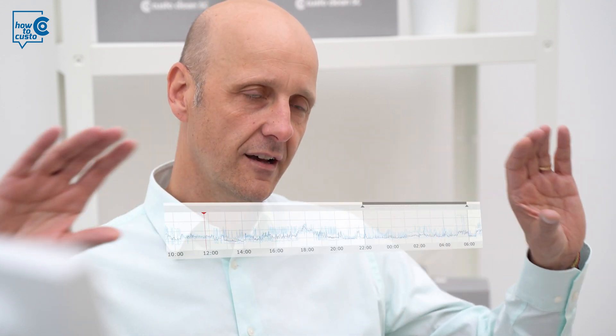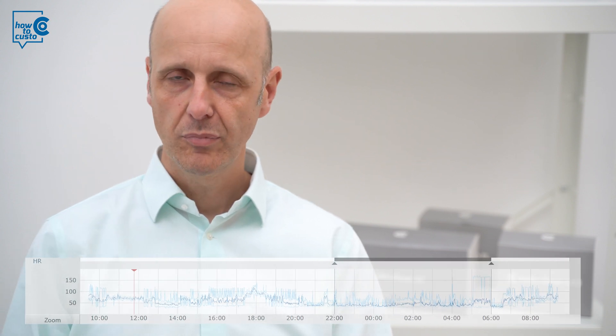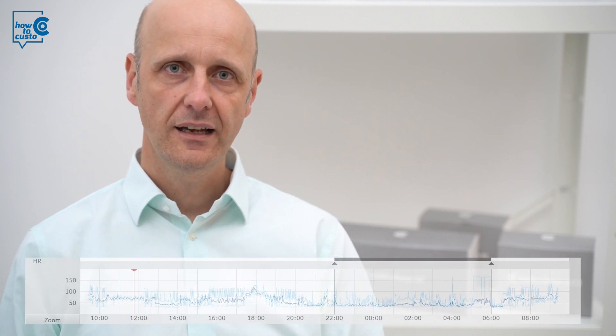The overview part works as follows. In the upper part of the Holter ECG you can see the heart rate trend. This gives you an overview of the heart rate in the observed period. It is a dark blue line that shows you the average heart rate per minute. You can also display the maximum and minimum heart rate trend.